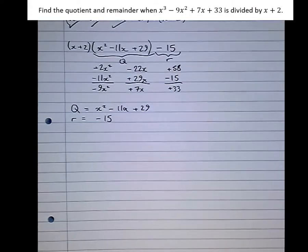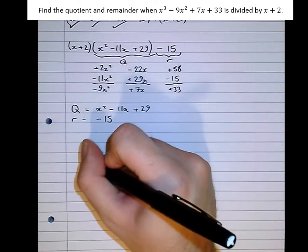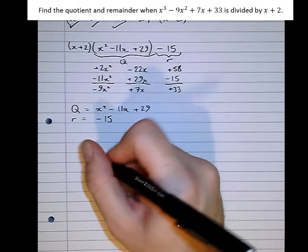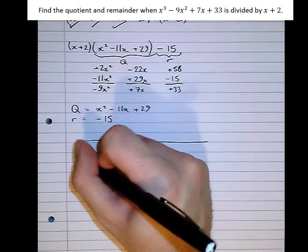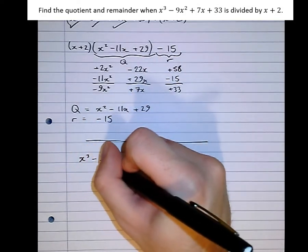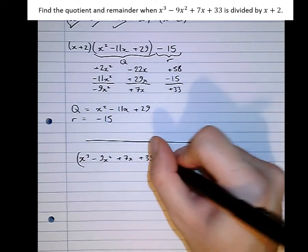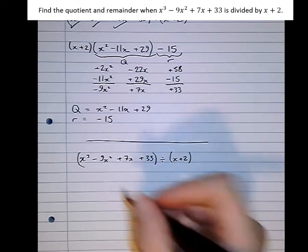However, there is a different way of writing this out. What we can do is write it using the grid instead. So we're going to do exactly the same calculations, except this time we're going to use a grid method. So rule that off. And once again, x cubed minus 9x squared plus 7x plus 33 divided by x plus 2.